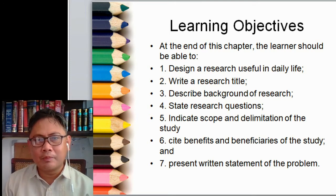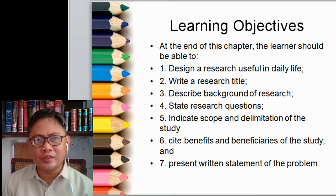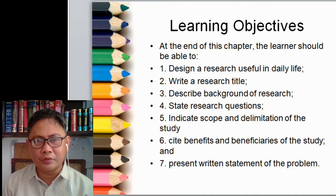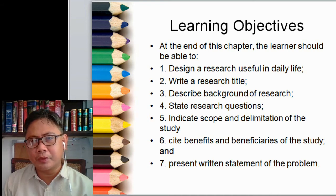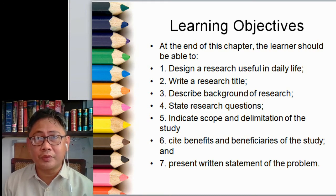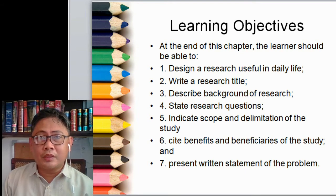Number four is to state research questions. This is one of the most difficult parts of your research. I consider this the blood flow of your research because all research questions should be reflected in the different chapters — Chapters 1 through 5 — and they should be synchronized with one another. Number five is to indicate the scope and delimitation of the study. There are three basic parts: the objective of your research, the research locale, and the period of your study.